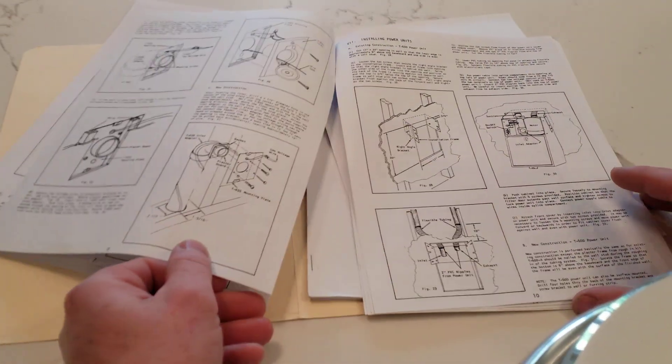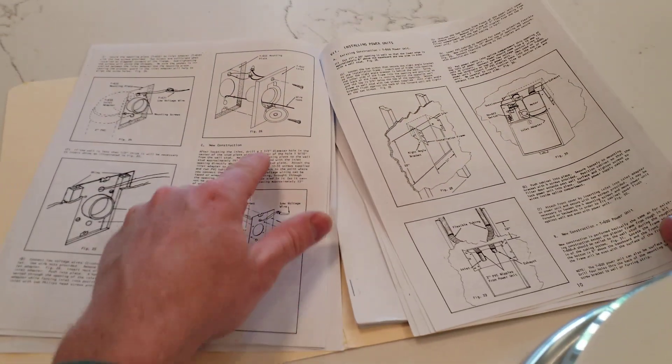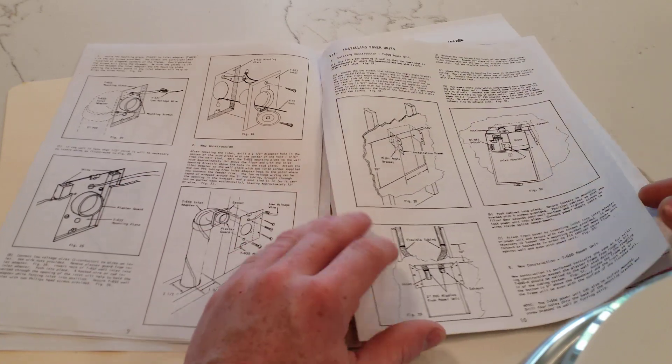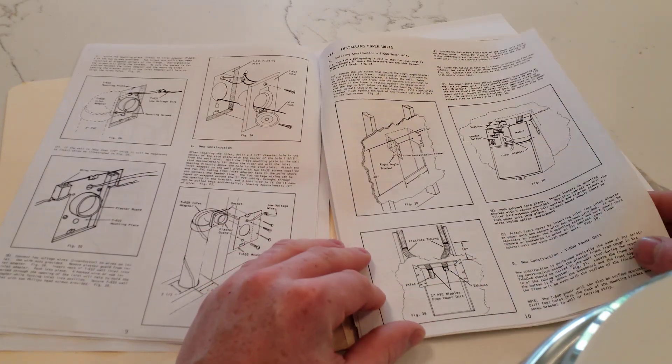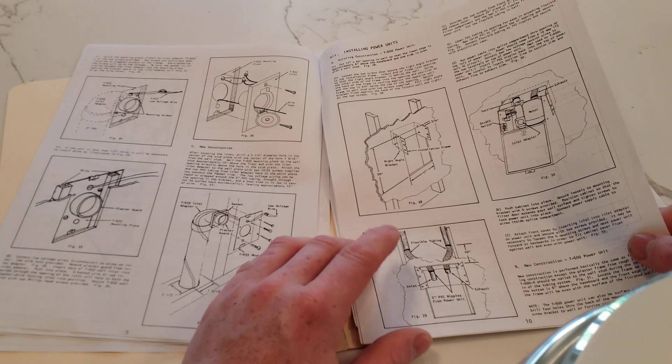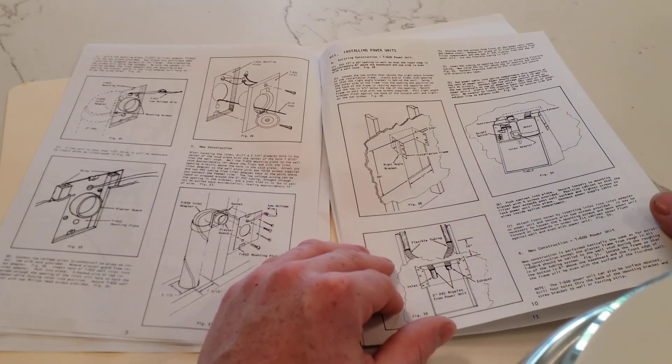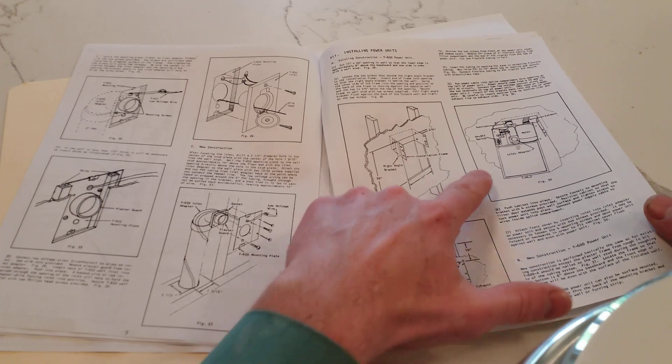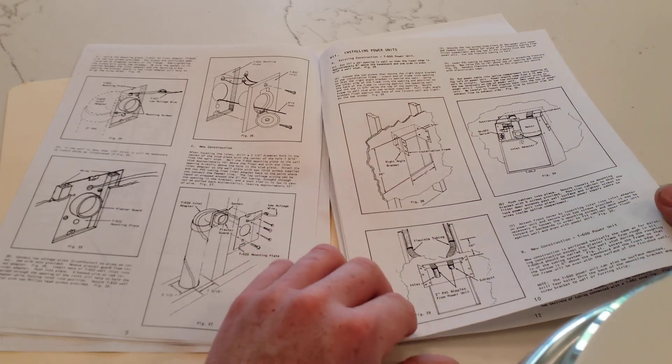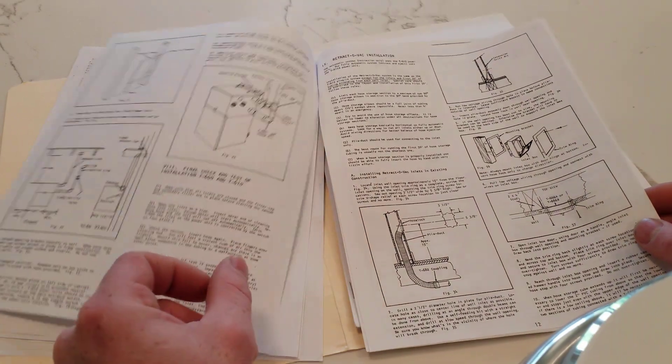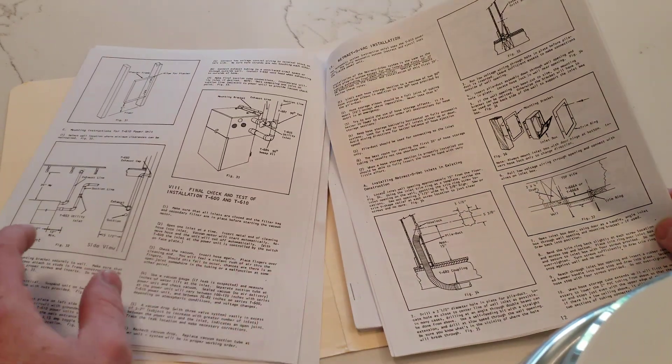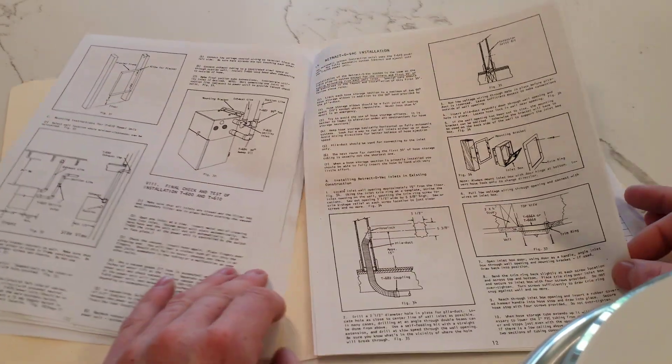So you can see all this stuff is just standard systems. They use the round door beam type inlets. And they made a built-in system with piping that would actually be recessed into the wall. So that's kind of cool. And it would have an inlet for the area that the power unit was in. So that's a neat idea, but it didn't take off.